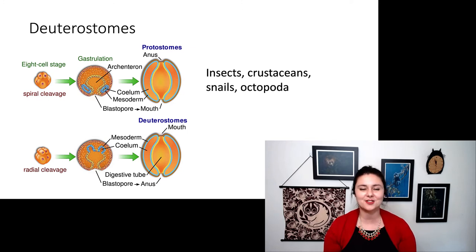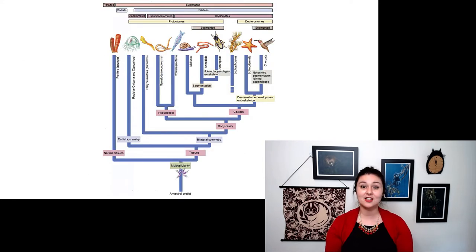Our protostomes here are insects, crustaceans, snails, and octopoda. Deuterostomes are starfish and vertebrates, of which we are one. So let's go back to our tree here. The next thing we can look at is, oh, we're here. We're at chordata. So we have a few things here: notochords, segmentation, and jointed appendages.